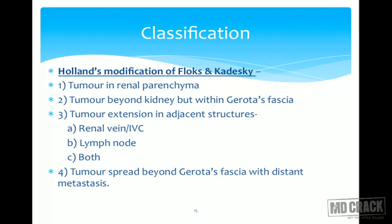Based on CT scan findings, we stage RCC using the Holland's modification of Flocks and Kadesky classification into four categories. Stage 1: tumor limited to the renal parenchyma. Stage 2: tumor beyond the kidney but still within the Gerota's fascia. Stage 3: tumor extension into adjacent structures such as the ipsilateral renal vein, IVC, or lymph nodes in the renal vicinity, or both. Stage 4: tumor spreads beyond the Gerota's fascia with distant metastasis.